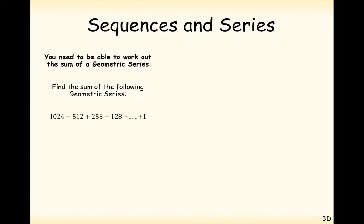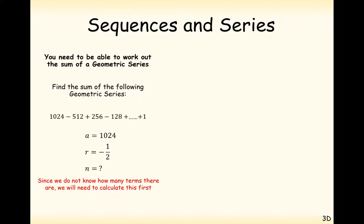A slightly more difficult question: 1,024 minus 512 plus 256 minus 128, continuing with alternating plus and minus signs. We can see that the starting term is 1,024. The common ratio between the terms is a negative half, and n we don't know. Since we don't know how many terms we have, we need to calculate this first using the nth term formula, which is a times r to the power of n minus 1, set equal to 1 to find which term the number 1 is in.